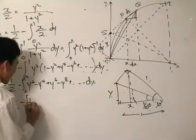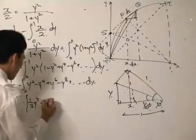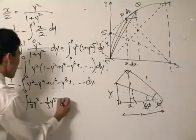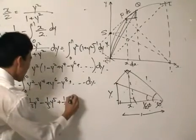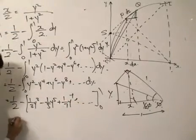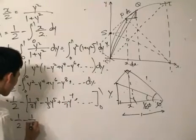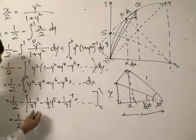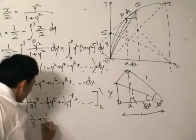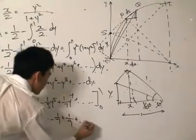I like that, very neatly. 1 divided by 3, y cubed, that would be plus—sorry, minus. 1 divided by 5, y to the 5, that would be a plus. 1 divided by 7, y to the 7, so on and so forth. Evaluate from 1 to 0, not a problem. Equals to half take away 1 third plus 1 fifth take away 1 seventh plus 1 ninth, so on and so forth.